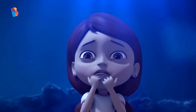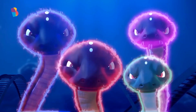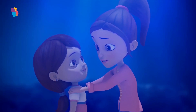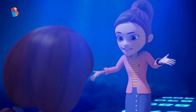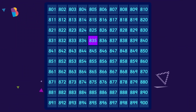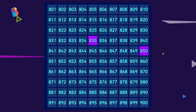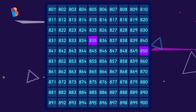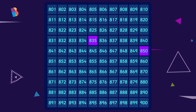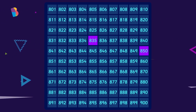Take away 835 from 850. Oh no, these numbers are so scary. No, they're not, Gia. We can do this together. Taking away 835 from 850 means we have to find 850 minus 835. We start at 835 and then count on to reach 850 to get the difference.